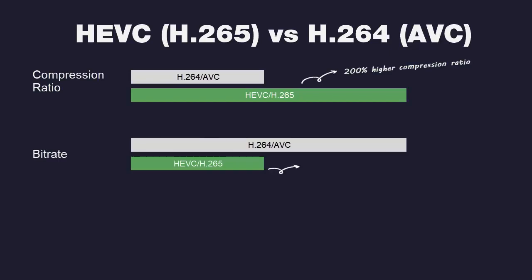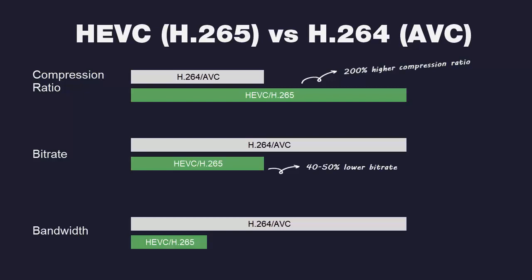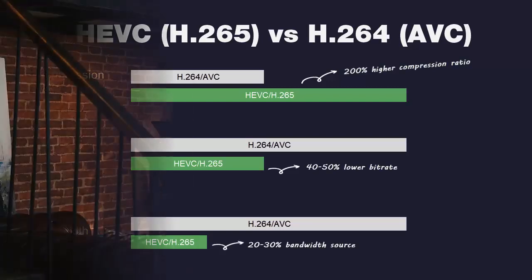HEVC offers 40% to 50% lower bitrate in the same resolution, and saves 70% to 80% bandwidth at the same level of quality.